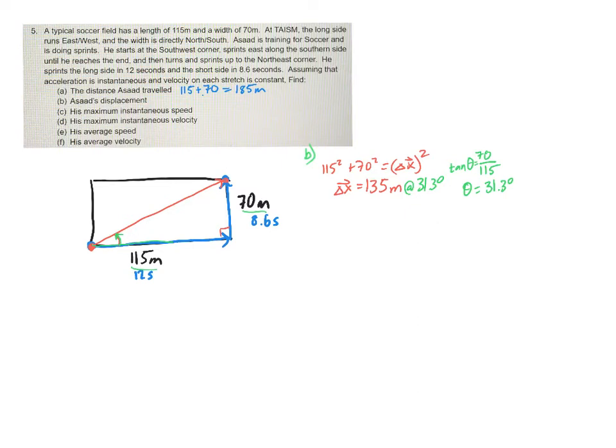So I should be able to just take that 115 and divide by 12, which then would give me a speed of 9.58 meters per second. And then if I do the same thing for the one on the side, if I go 70 divided by 8.6 seconds, then I get a speed of 8.14 meters per second. So the higher speed, obviously, is this one. So letter C is going to be 9.58 meters per second, because it says that the speed is constant along each side, along each stretch.